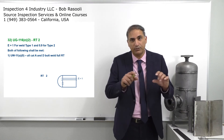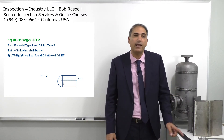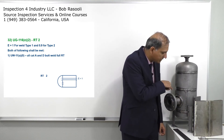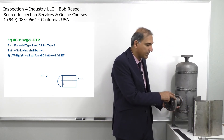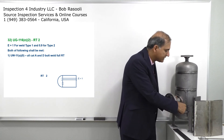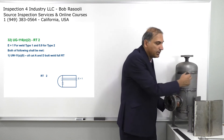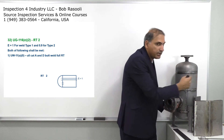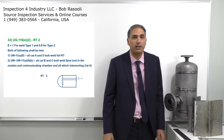Now, what the code indicates for the definition of RT2 — from UW-11 — it says all Category A and D butt welds require full RT. For this pressure vessel, the full penetration nozzle joints are Category D joints but they are not butt welds, so those don't apply. If it were forged material, those butt welds would need full radiography. Category A butt welds — one here and one in the back — and if it were a hemispherical head, that joint would also go to full radiography.